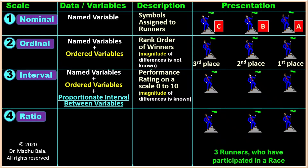In interval scale, the performance rating is on a scale of 0 to 10 and the magnitude of difference is known. A has been assigned rating 9.6, B is 9.1, and C has been given 8.2. There is a proportionate interval between the variables. Unlike ordinal scale where we cannot know the magnitude of difference, in interval scale we can know the magnitude and difference among the variables.